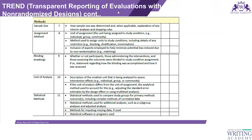Then you write about the sample size — how it was determined — and the assignment method: whether the intervention is assigned individually, to a group, or to a particular community. If the study is blinded, you write about how blinding was done, and whether it is single-blinded or double-blinded. All this information — sample size, assignment method — will be provided by the biostatistician or researcher. You do not need to do any calculations; you just need to articulate this information.